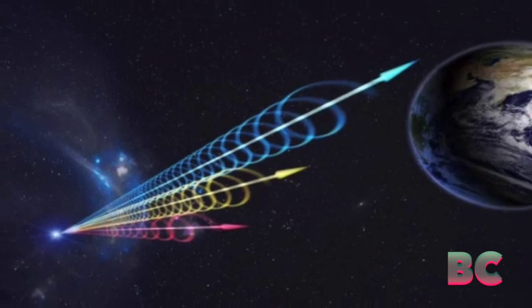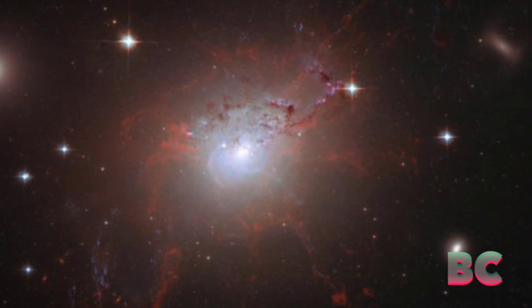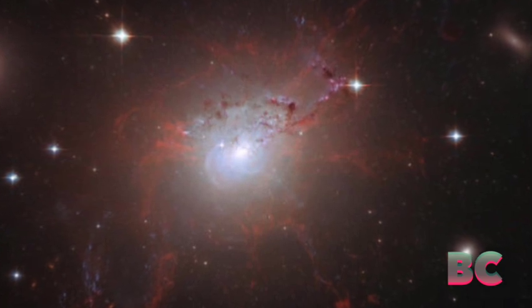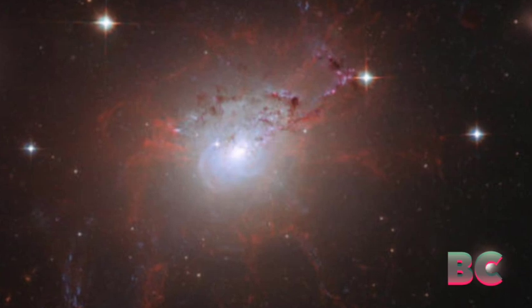The first FRB was uncovered in 2007, and since then scientists have detected hundreds of these rapid flashes emanating from various distant locations across the cosmos.